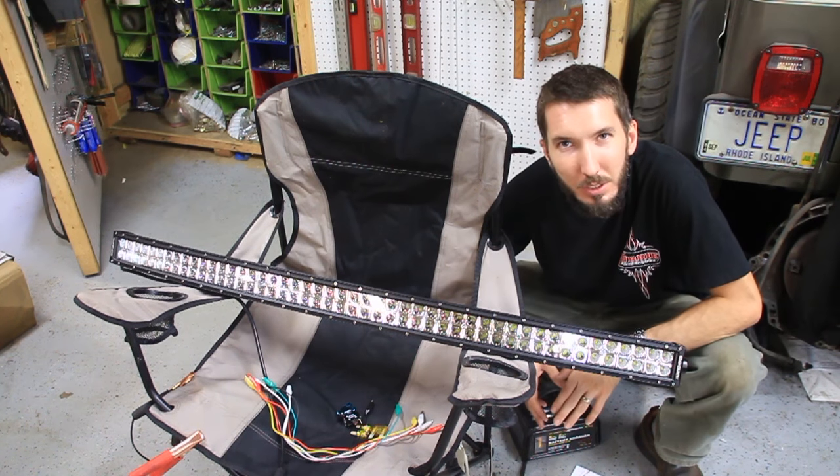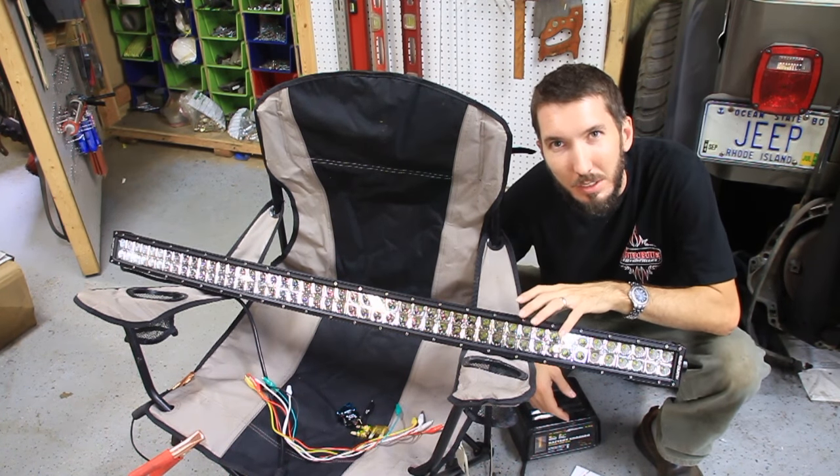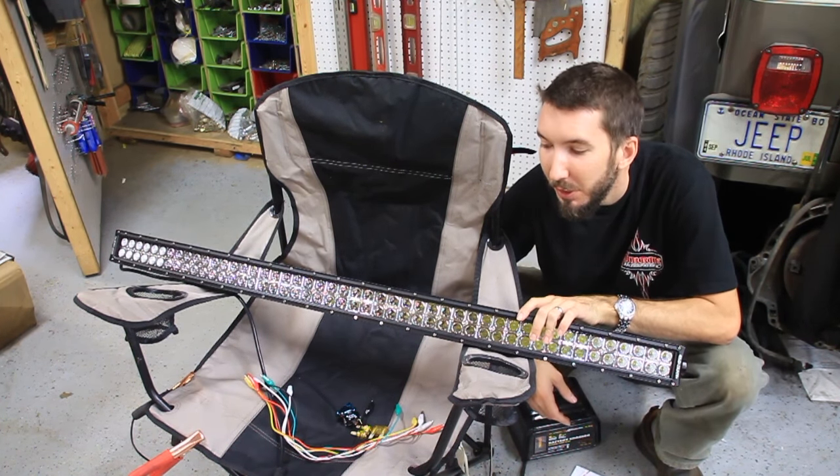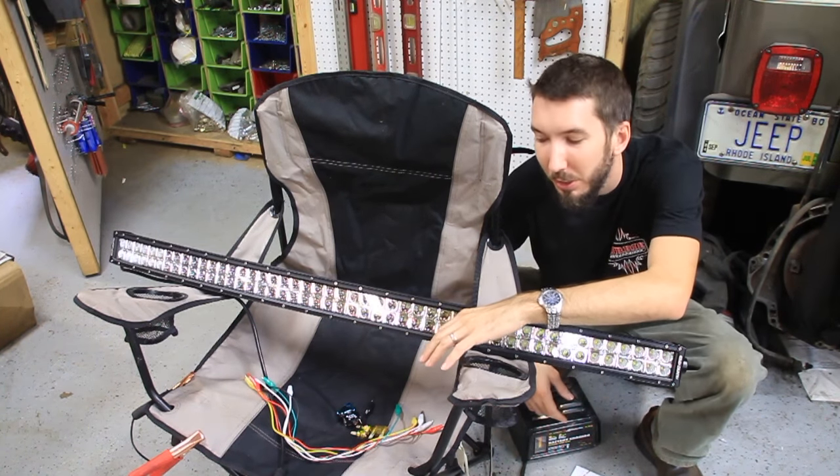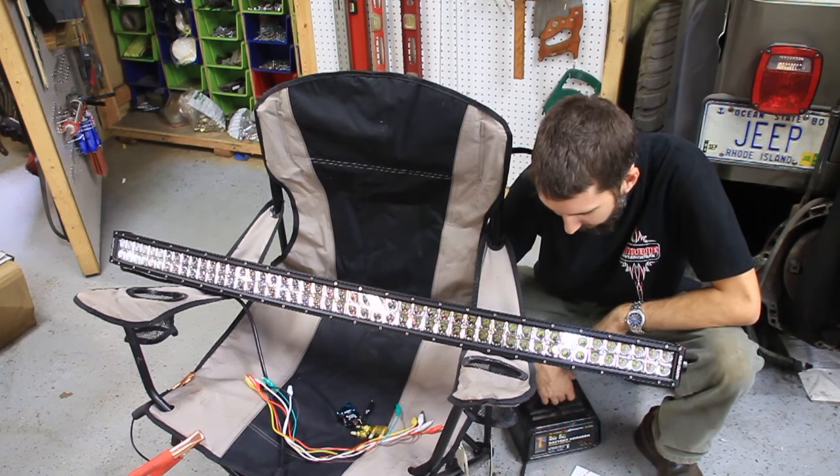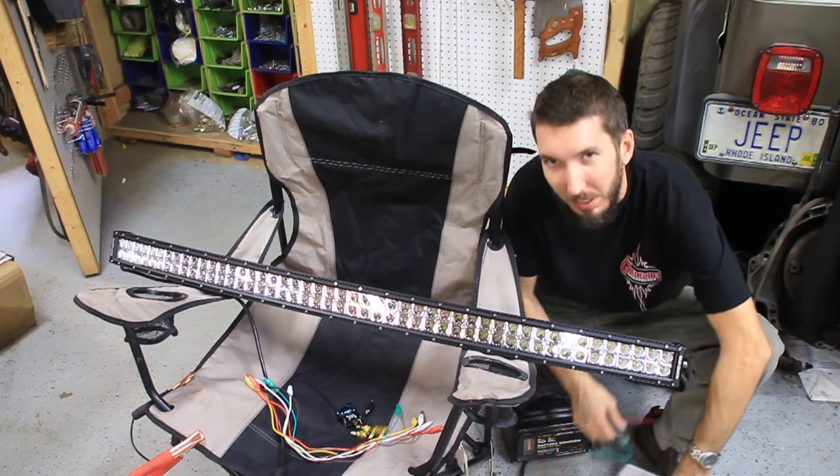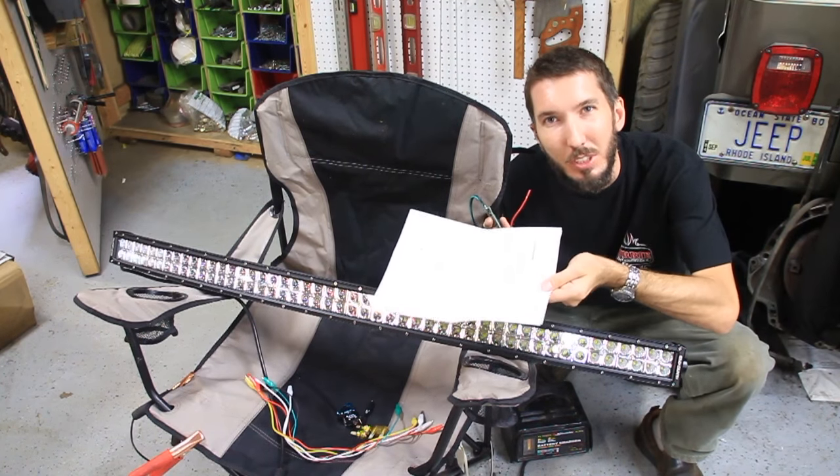So I'm not ready just yet to install any lights on the crawler. To test it, I've got this 50 inch curved LED light bar from Rough Country. I've got some alligator clips, some fuses, a switch, and to power everything, I've got a battery charger that we're going to use for power.